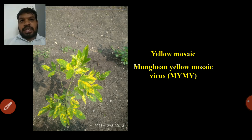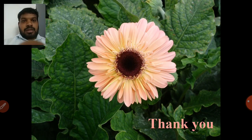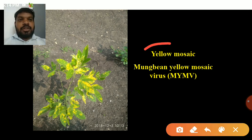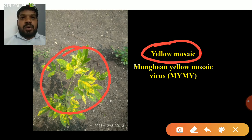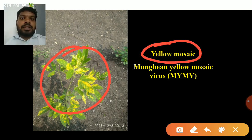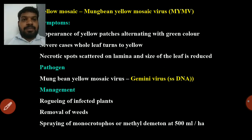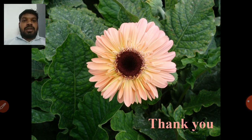Next is yellow mosaic caused by Mungbean yellow mosaic virus, which produces yellow color lesions or yellow color patches on leaves. To differentiate: PGNP sterility mosaic shows pale green and dark green color mottling, while yellow mosaic shows pure yellow color patches. Control is similar to other mosaic diseases affecting green gram and black gram. This concludes the topic of diseases of red gram.